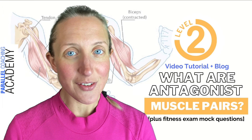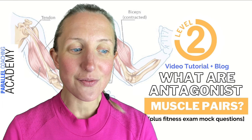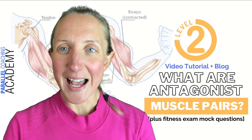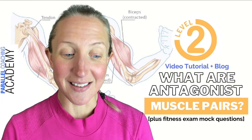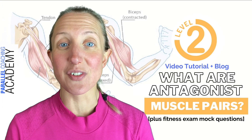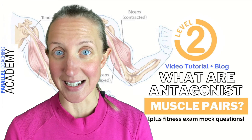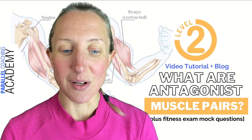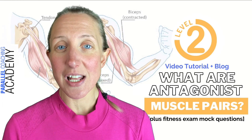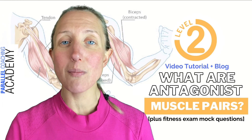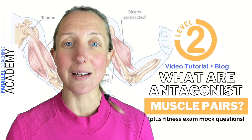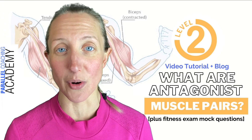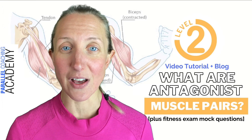Before we dive in any deeper, let's first find out what an antagonist muscle is, and then we'll explore some different examples of agonist antagonist pairings. An antagonist muscle is essentially an opposite muscle. Every single muscle in your body has an opposing pair.